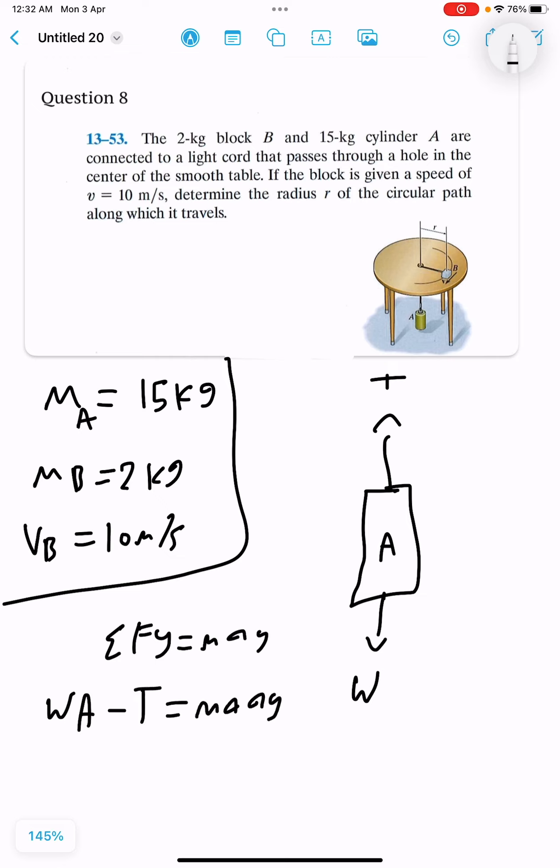So we have 15 multiplied by acceleration due to gravity 9.81 minus T equals 15*a1. Therefore, T plus 15*a1 equals 147.15 by calculator.